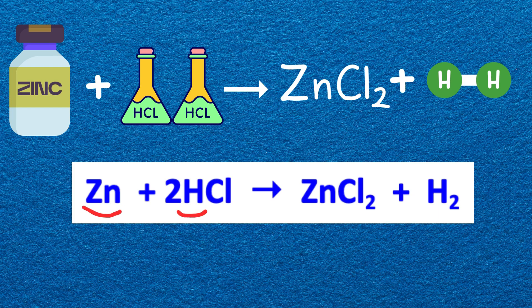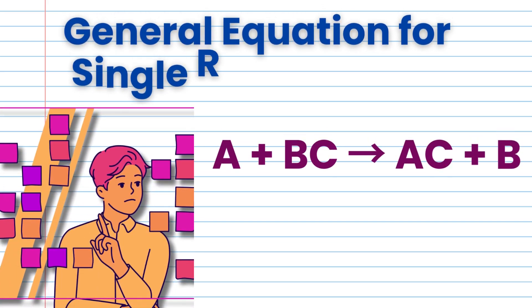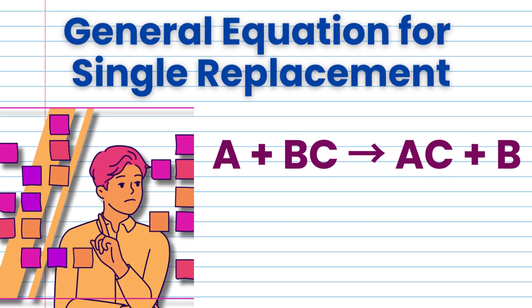So zinc here replaces the hydrogen in the hydrochloric acid to form zinc chloride and hydrogen gases released. Single replacement reaction can be represented as A plus BC gives AC plus B. Element A replaces element B in the compound BC, resulting in the formation of a new compound AC and the release of element B.